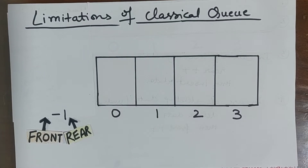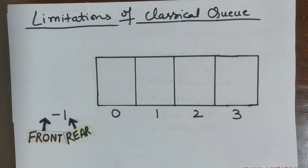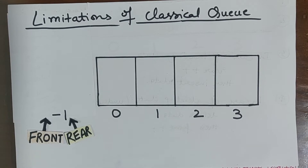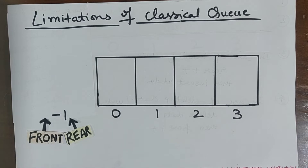Hello everyone, the next topic is limitations of classical queue. The queue I have already discussed in my previous video is also known as simple queue, linear queue, or classical queue. Now let's discuss the limitation. I'll explain with a scenario. Initially, my queue is empty and front and rear both point to minus one.